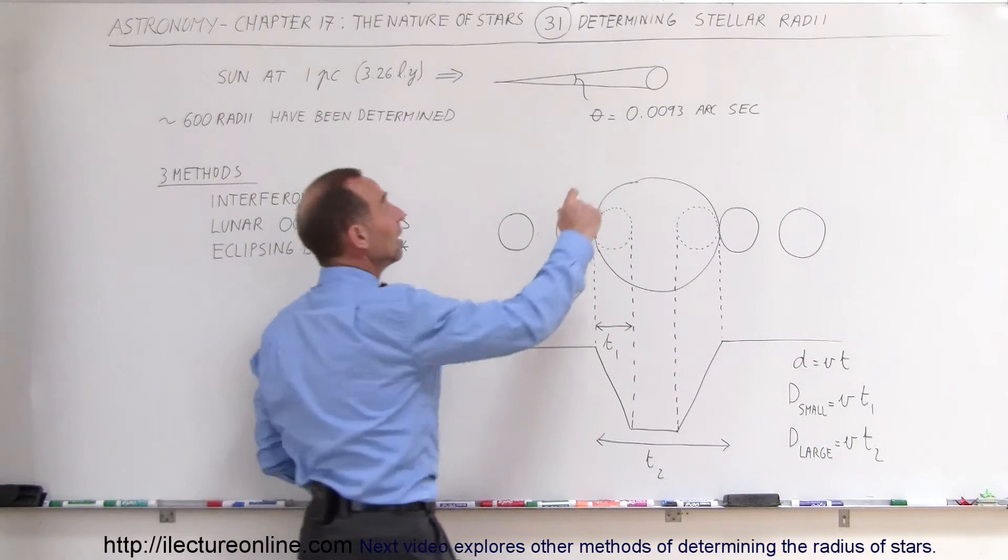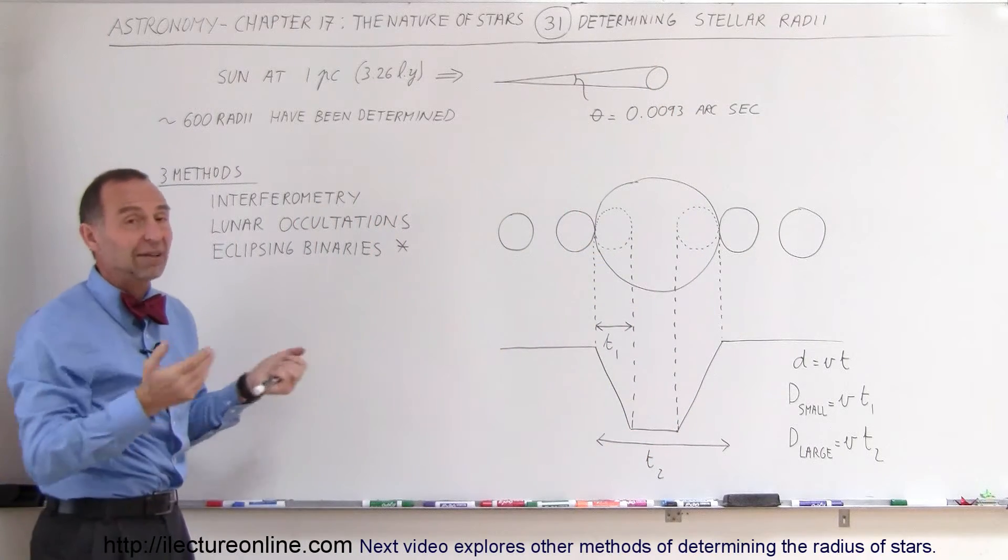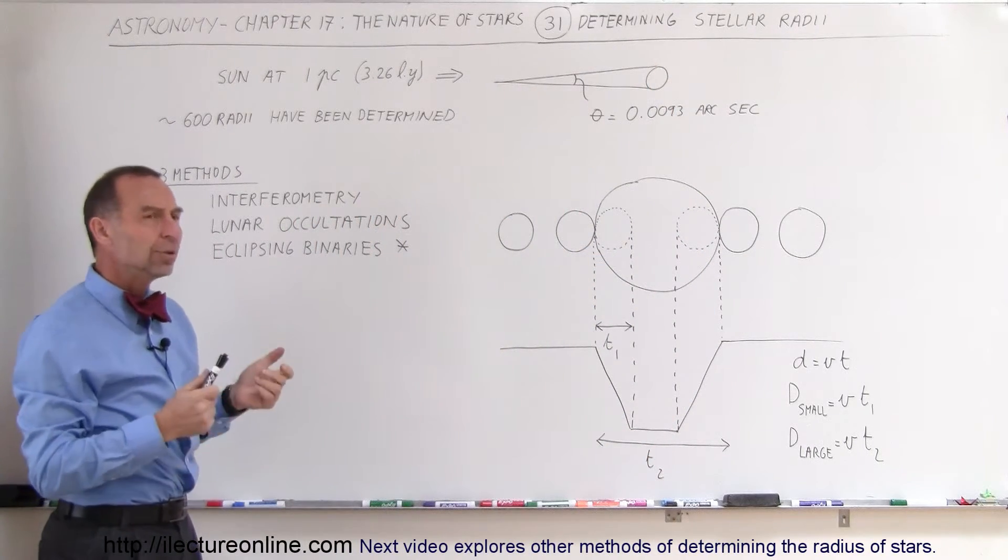And ultimately, what we're interested in is we want to know the diameter of the star so we can then find the radius, which is of course half the diameter. So how do we do that?